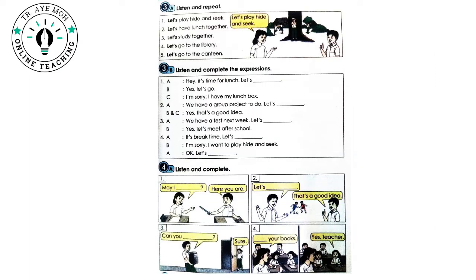Track 6. 3A. Listen and repeat. 1. Let's play hide and seek. 2. Let's have lunch together. 3. Let's study together. 4. Let's go to the library. 5. Let's go to the canteen.